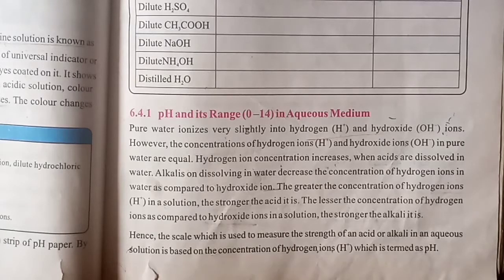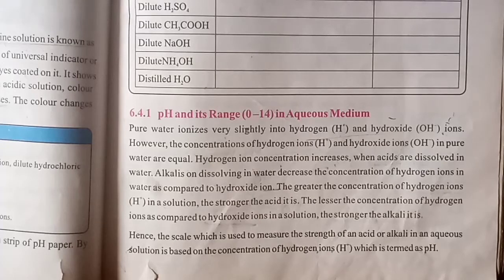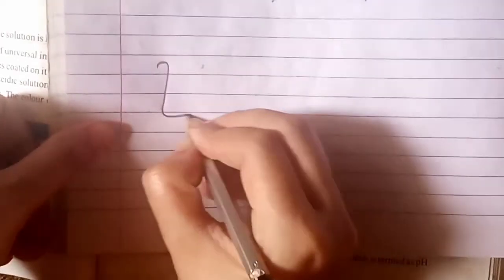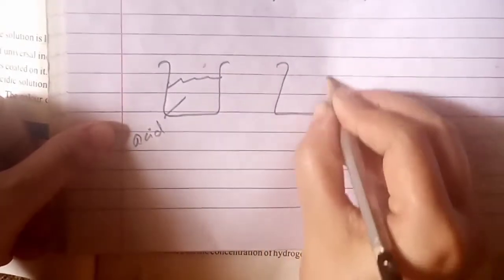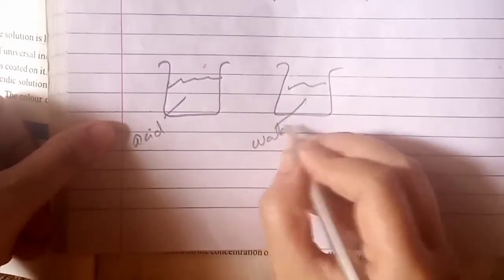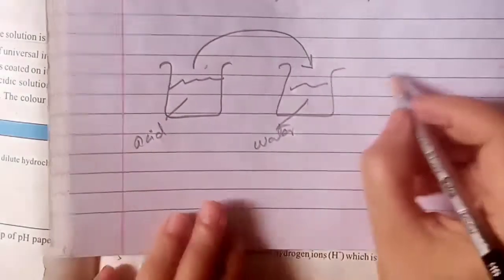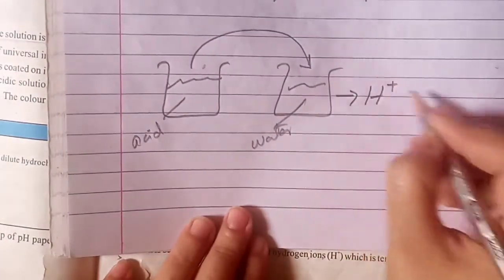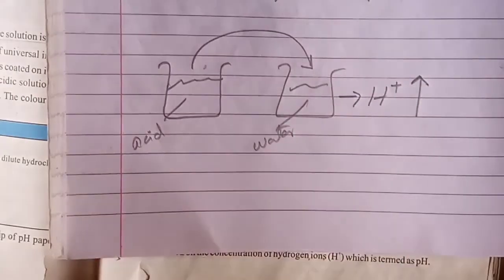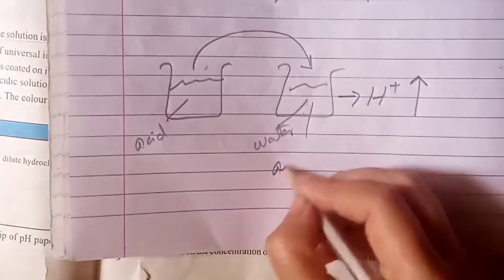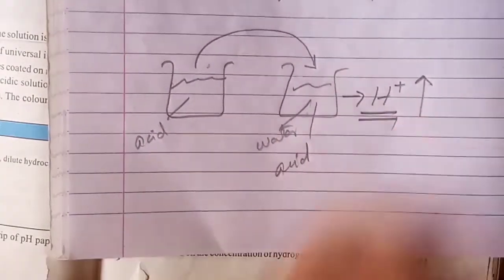Hydrogen ion concentration increases when acids are dissolved in water. When an acid is added to water, the H+ concentration becomes more. The solution in which you add an acid — in that solution, which concentration will be higher? Hydrogen ion concentration.